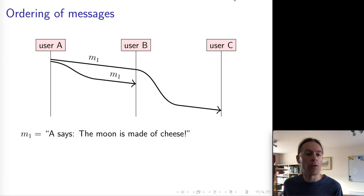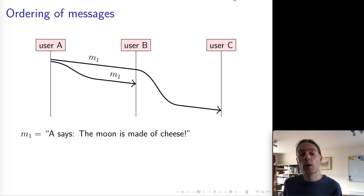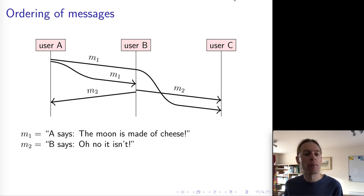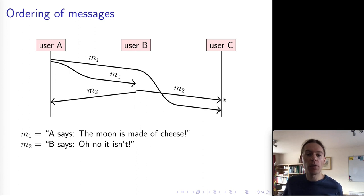Let's say we have user A who says 'the moon is made of cheese,' and sends that message M1 to users B and C. We assume our usual system model of reliable network links, but messages might be delayed or reordered. It can happen that user B receives M1 fairly quickly, and user C receives it a little later due to network delay. Then user B responds to M1, saying 'no, the moon is not made of cheese,' and sends that as message M2 back to user A and also to user C. What can happen is that user C actually receives M2 before receiving M1.